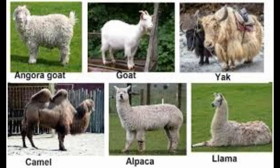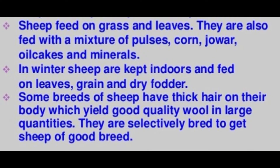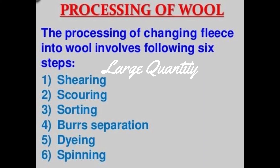For obtaining wool, sheep are reared and bred, and their hair is cut and processed into wool. The sheep are provided food and shelter for obtaining good quality wool in large quantities. Processing fibers into wool involves many steps.